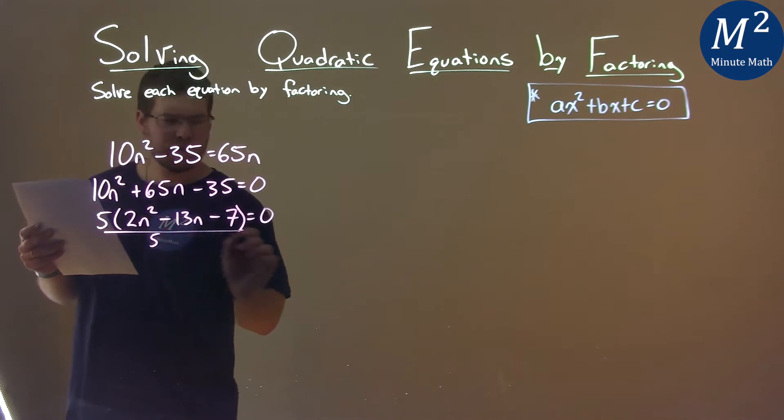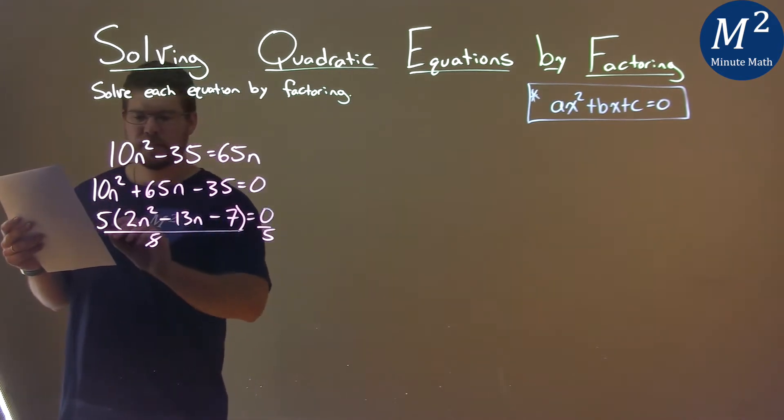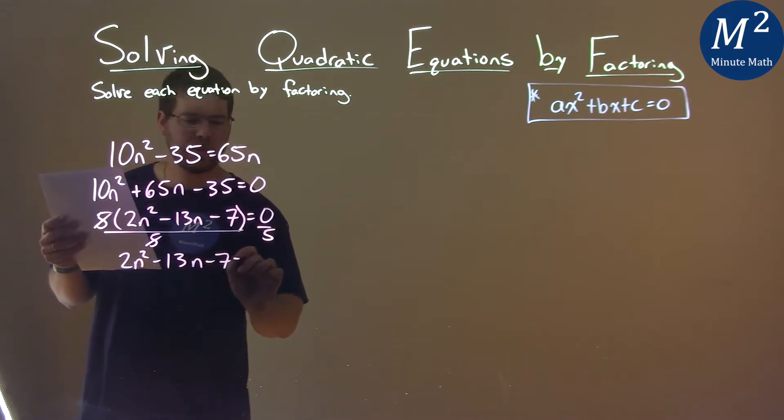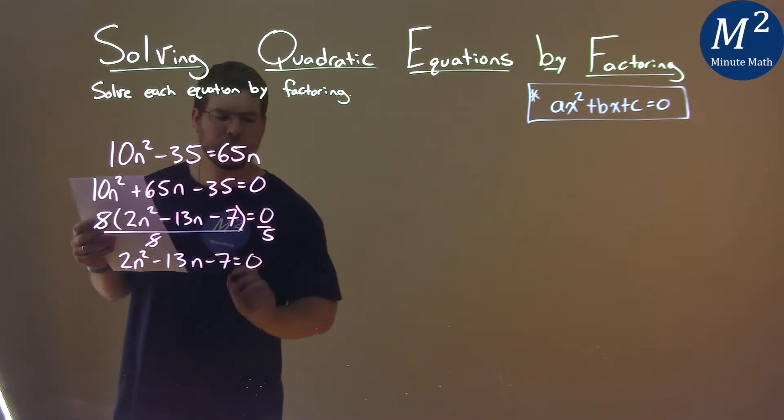Now it looks easier to deal with. Divide both sides by 5. Let's get rid of that 5 out front. And we have 2n squared minus 13n minus 7, and 0 divided by 5 is 0.